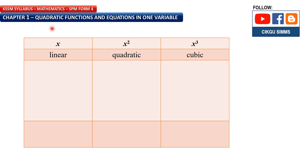This chapter is about quadratic functions. For quadratic, x is to the power of 2. If you see x to the power of 1, it's linear. For x to the power of 3, it's called cubic. For linear, x to the power of 1, the graph is a straight line. For quadratic, it's a curve like this. For cubic, it's a curve like this.